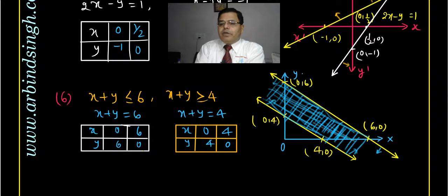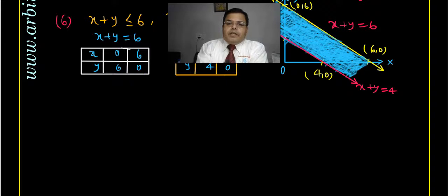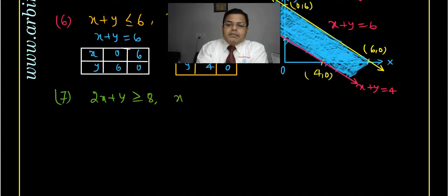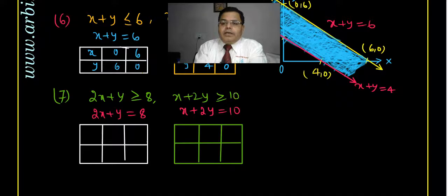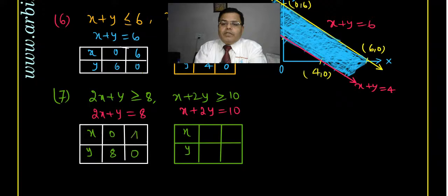The region between the two parallel lines is the solution. Now question number 7. The equations are 2x + y ≥ 8 and x + 2y ≥ 10. The corresponding equations are 2x + y = 8 and x + 2y = 10. For 2x + y = 8: if x = 0 then y = 8, and if y = 0 then x = 4. For x + 2y = 10: if x = 0 then y = 5, and if y = 0 then x = 10.